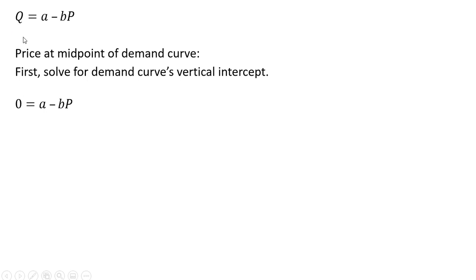That occurs when Q equals 0, so I take the demand equation and set Q equal to 0. And now I'm going to solve for the price, P. Moving some things around and dividing through by B. So this is the demand curve's vertical intercept. Price equals A divided by B.